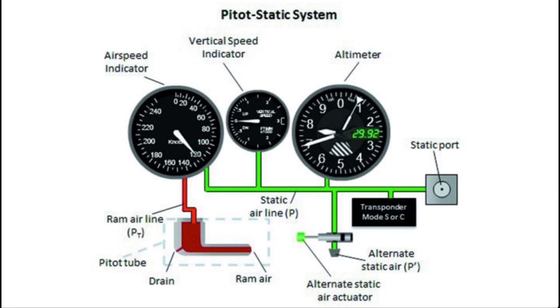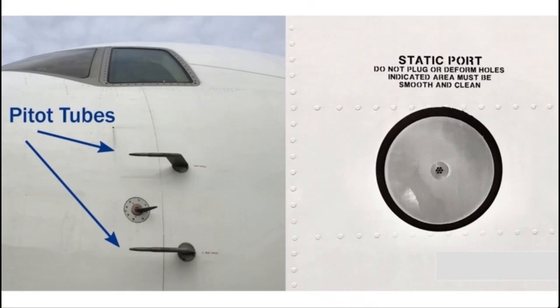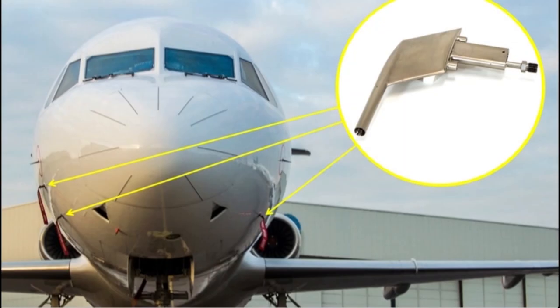The ASI, VSI, and altimeter all take pressure readings from the pitot tube and static tube. So we need to know the function of the pitot tube and static tube. This is the pictorial depiction of the pitot tube and static port on the fuselage of the aircraft.